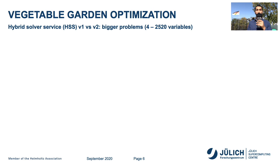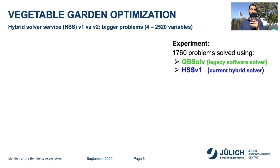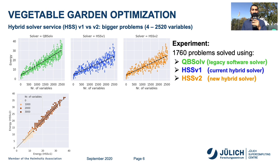Next, we implement bigger problems consisting of 4 to 2520 variables on the Hybrid Solver Service Version 1 and Version 2. The experiments we performed had 1760 problems which were solved using QB Solve — the legacy software solver — Hybrid Solver Service Version 1, the current Hybrid Solver, and Hybrid Solver Service Version 2, the new Hybrid Solver. These are the results.